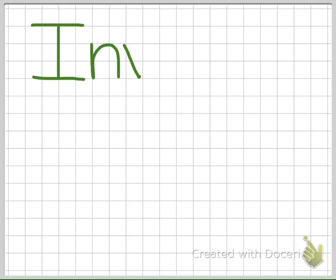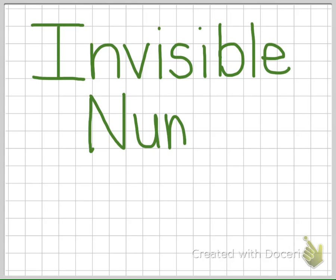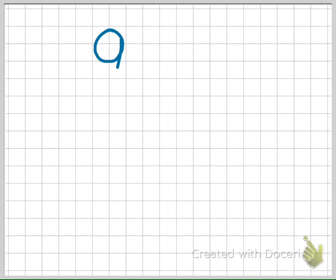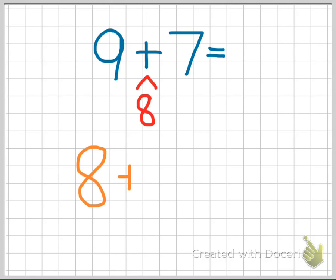The next addition strategy is called invisible number. Once again, the double strategy helps us solve problems with the pattern using the invisible number strategy.